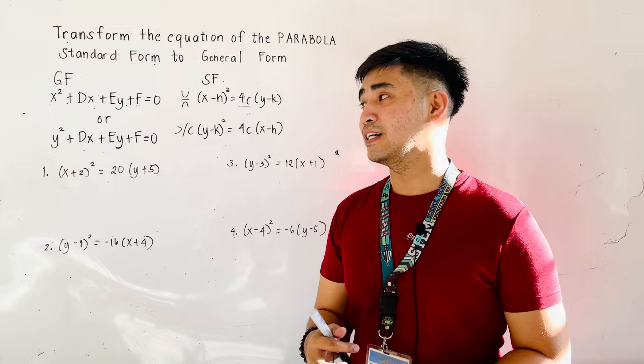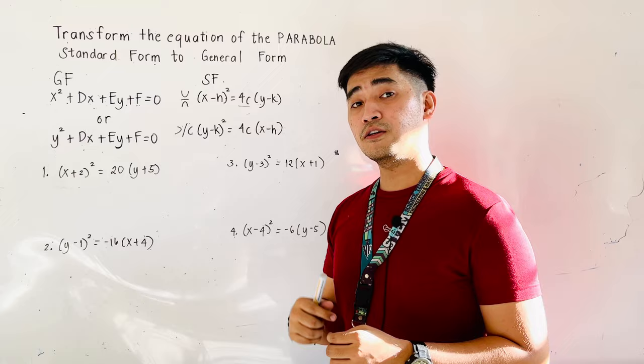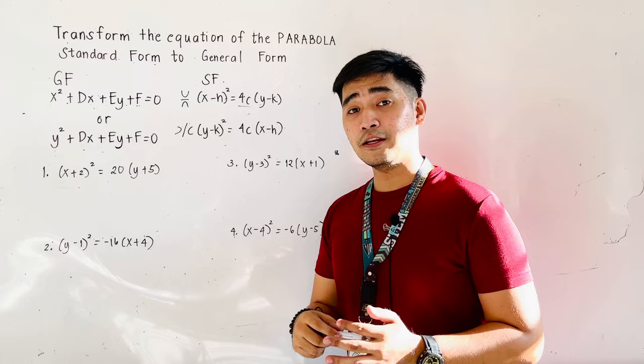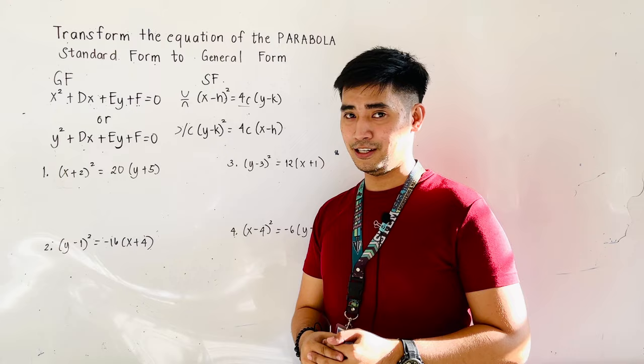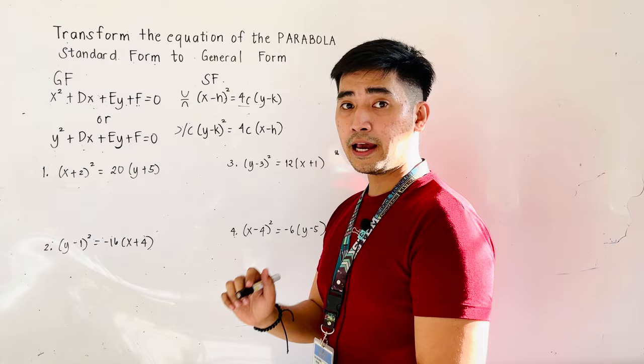And this is the standard form. If it is opening up or down, that becomes x minus h quantity squared is equal to 4c times the quantity y minus k. And if the parabola opens to the left or to the right, its equation will be y minus k quantity squared is equal to 4c times the quantity x minus h. So I guess we're now ready to transform the standard going to general form. So we are given number 1: x plus 2 quantity squared is equal to 20 times the quantity y plus 5.